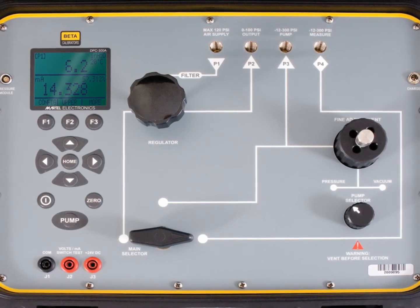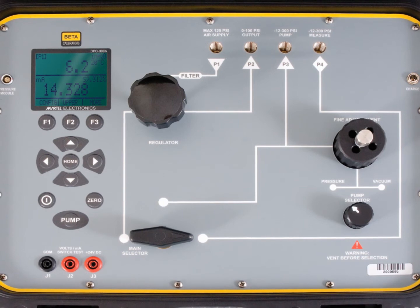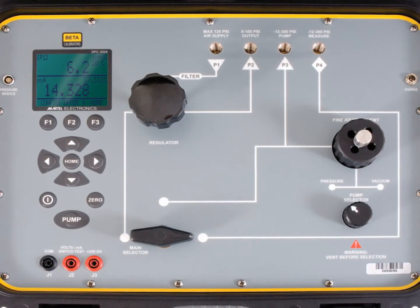PI transmitters, controllers, pressure gauges, switches, and recorders normally found on a process control loop.